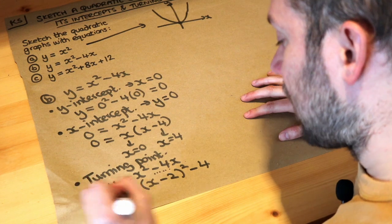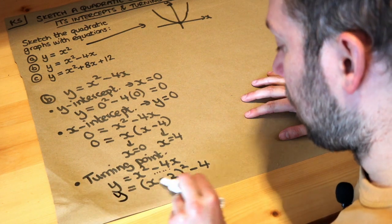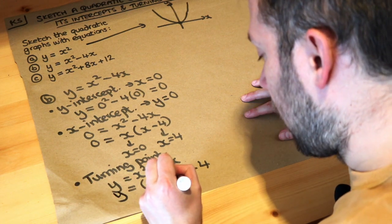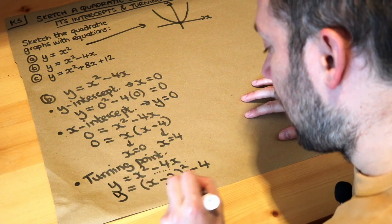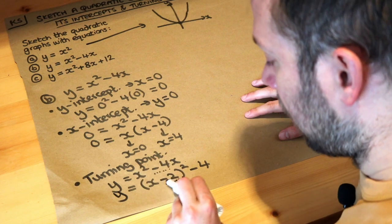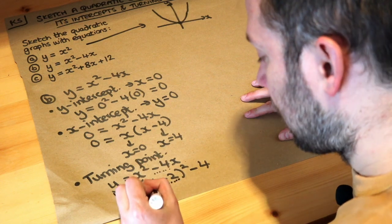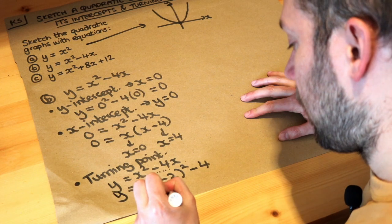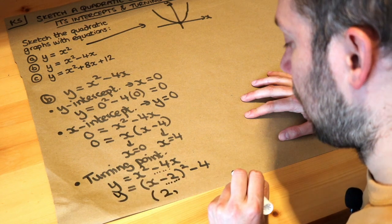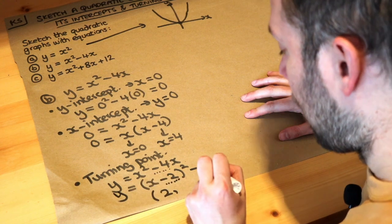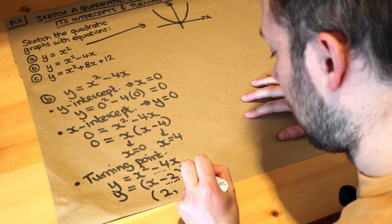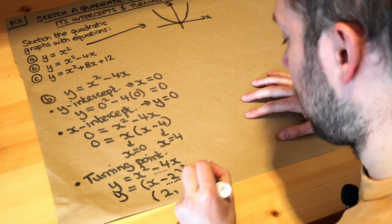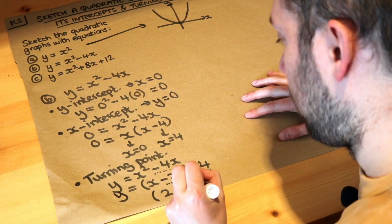From the completed square form we can read off the turning point. We negate the number just after the x: the minus 2 becomes positive 2 as the x-coordinate. Then we use the final constant in its original form as the y-coordinate, so minus 4. The turning point is (2, minus 4).